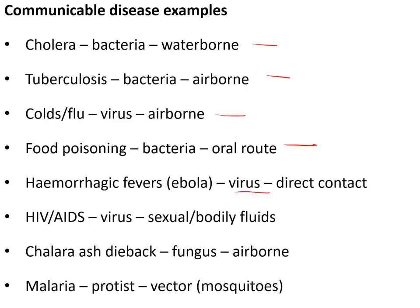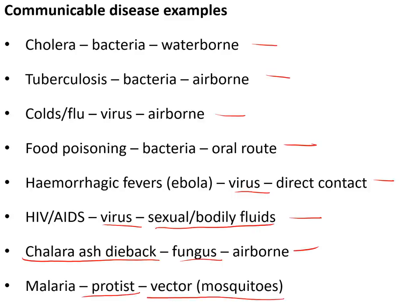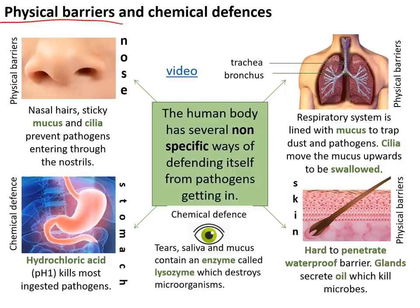HIV, which leads to AIDS, is caused by a virus spread through sexual contact or bodily fluids such as blood, including through sharing needles. Ash dieback is a disease that affects trees, spread by a fungus and is airborne — making it very difficult to control. Malaria, which causes severe fever, chills, and muscle aches and kills millions every year, is caused by a protist spread by mosquitoes biting you — making mosquitoes a vector.